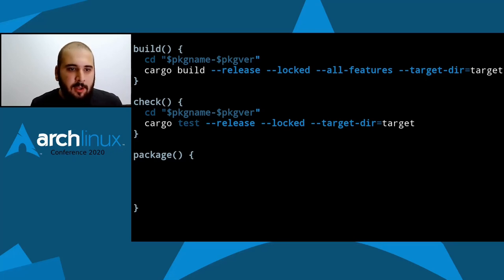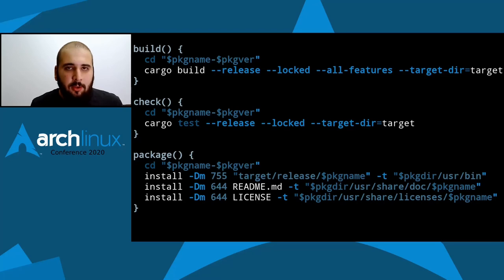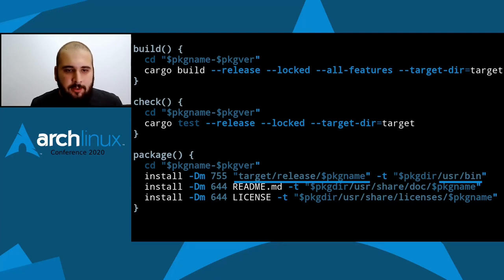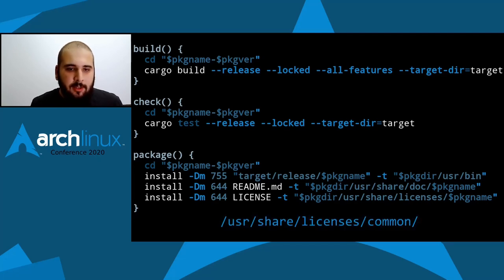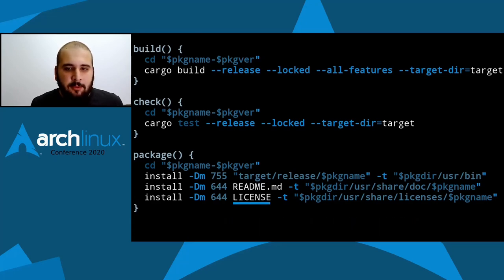The check function runs the tests, although we don't have any tests here. The package function actually installs — it copies the necessary files to the correct locations. We copy the release binary from target/release to usr/bin, and install the readme to usr/share/doc. The license is important: for licenses like GPL3 or GPL2, we don't need to install the license manually because it's in usr/share/licenses/common. But MIT is not in that directory, so we have to install the license to usr/share/licenses manually.